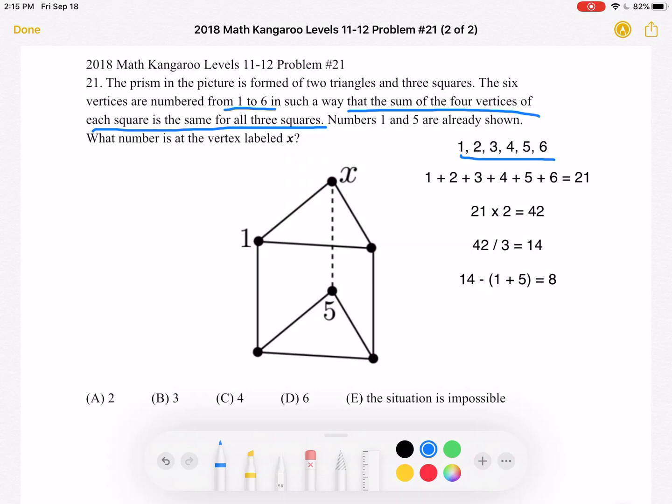Let's start by finding the sum of the numbers on all the vertices. That's 1 plus 2 plus 3 plus 4 plus 5 plus 6, which is equal to 21.